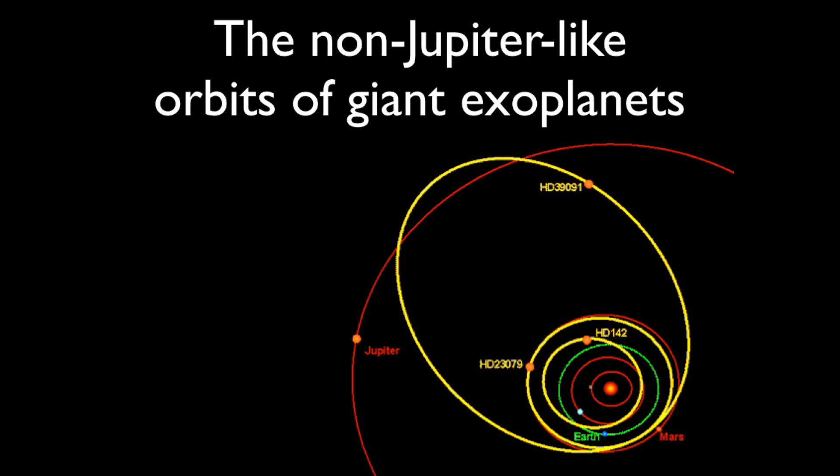The next question to ask is what are the odds of our Jupiter having an orbit like our Jupiter has? What you see here in yellow are the orbits of some of the giant planets that we see around other stars, so Jupiters around other stars. You can see they often have very stretched out orbits or much smaller orbits than our Jupiter's, which is shown in red.